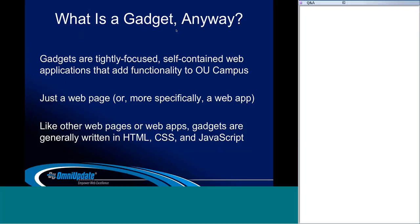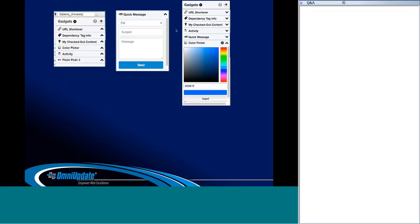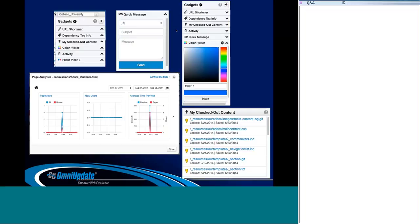You might think of a gadget almost like an app on your phone. Gadgets are tightly focused, self-contained web applications that add functionality to OU Campus — essentially a web app. They're generally written in HTML, CSS, and JavaScript. You can use additional server-side or client-side code depending on what functionality you want. Gadgets can exist in the sidebar or on the dashboard and can help with content creation or managerial activities. They can connect to the OU Campus API or third-party API clients.